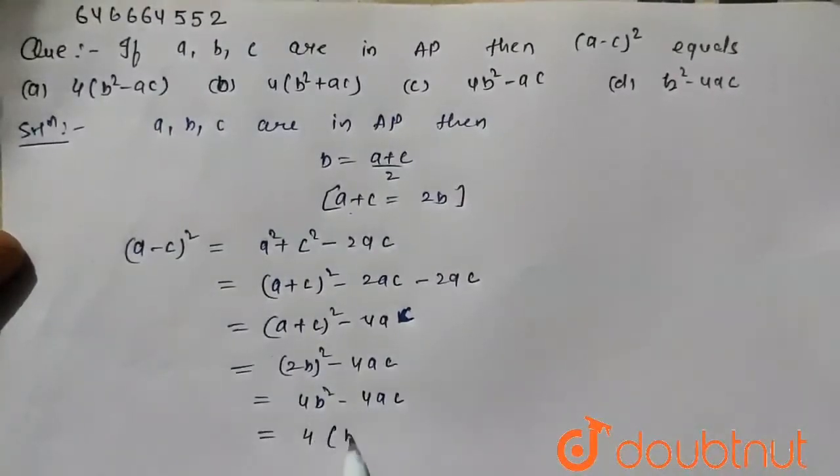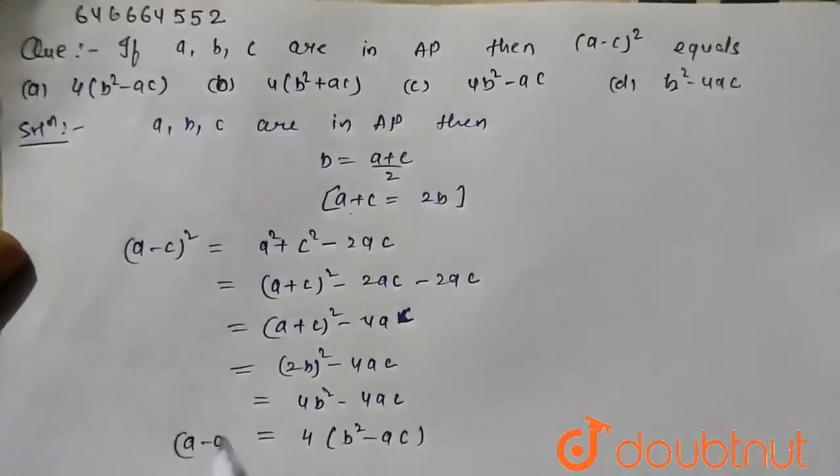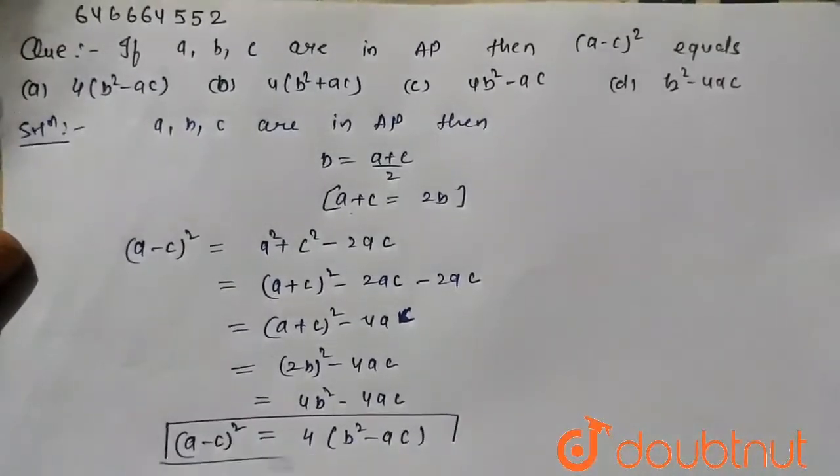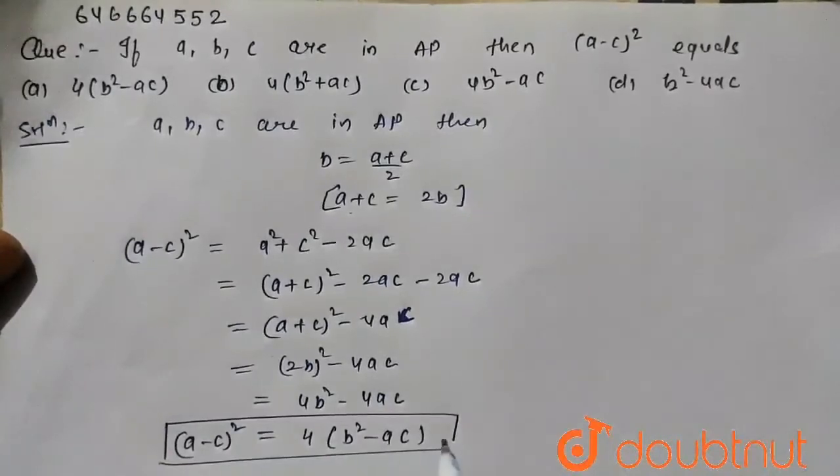Taking 4 as common, it becomes b square minus ac. So a minus c whole square is written as 4 times b square minus ac. So option a is correct.